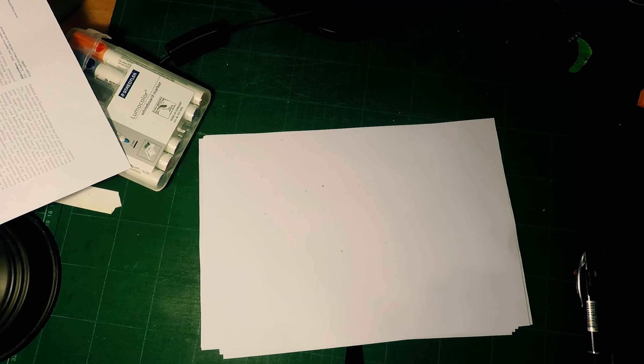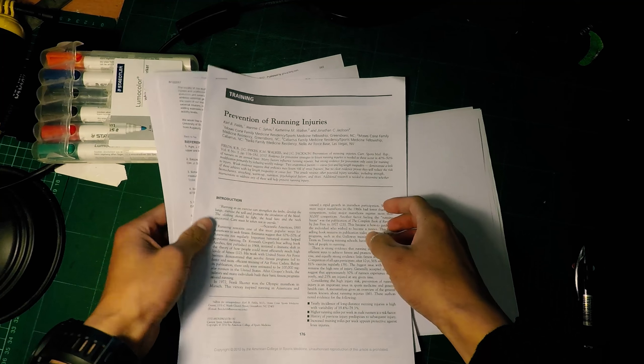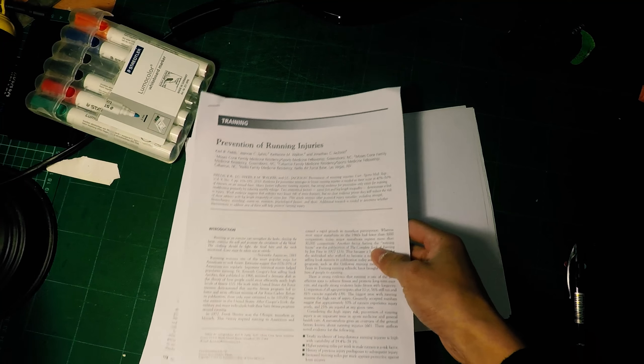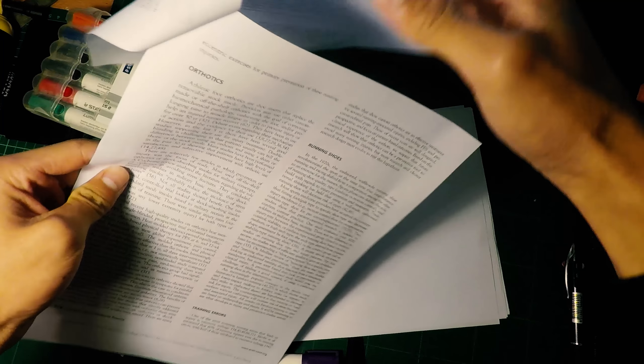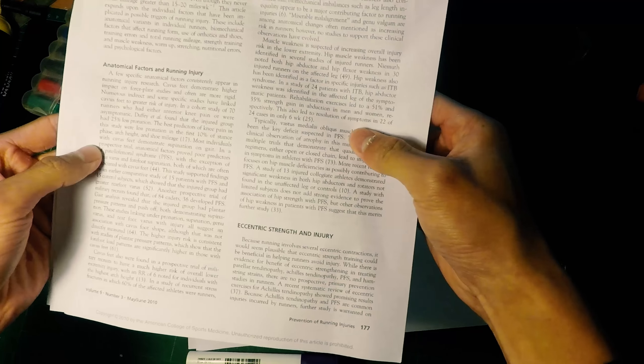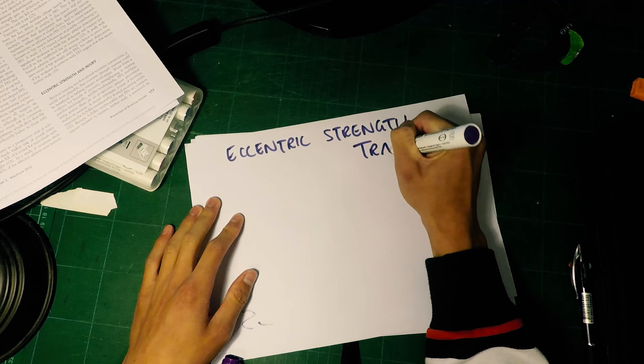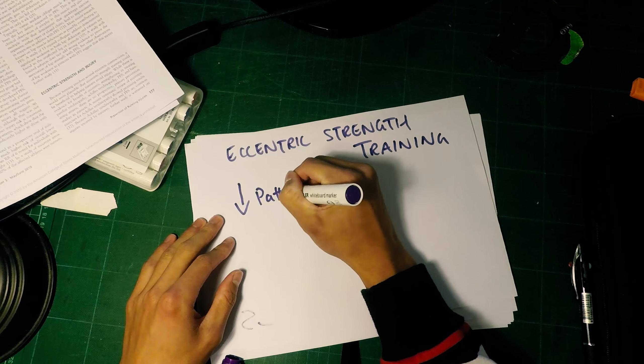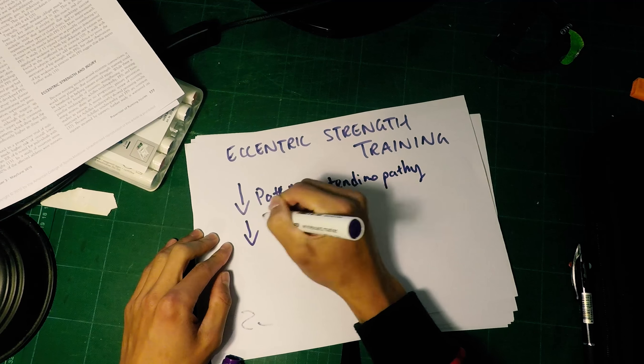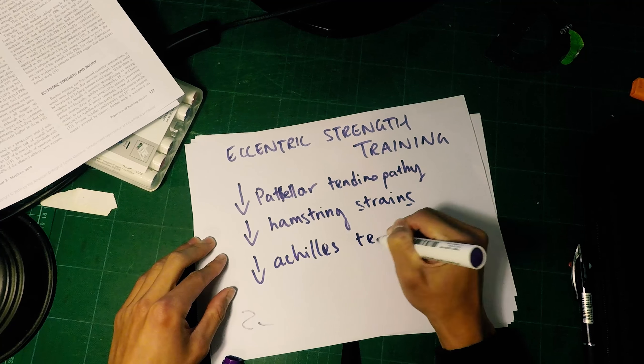So I don't want to bore you with all this evidence supporting squats and how good they actually are. Actually, I will. In this awesome paper published in the American College of Sports Medicine called 'Prevention of Running Injuries,' it's an amazing paper talking about all these things which contribute to running injuries. There's a part which talks about eccentric strength training and injury. If you do squats properly and emphasize the eccentric phase, you're going to decrease patellar tendinopathy, decrease hamstring strains, and decrease Achilles tendinopathy. These are the three most common running injuries.